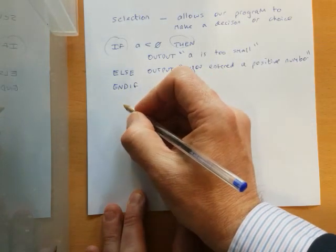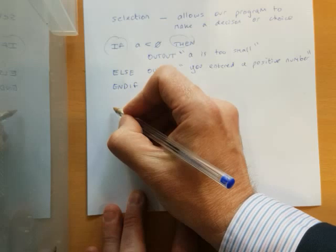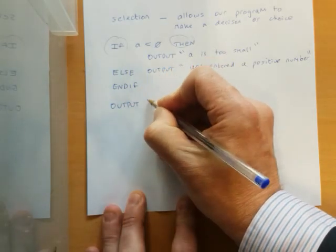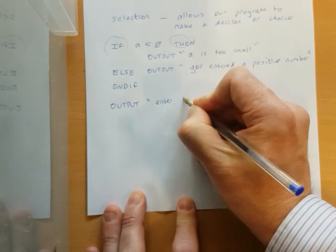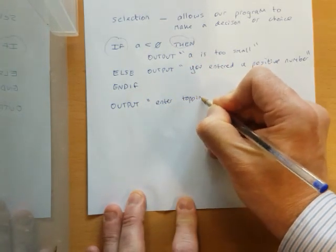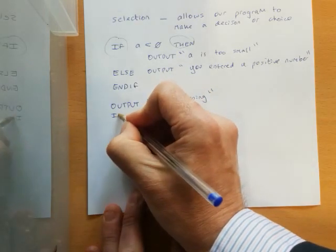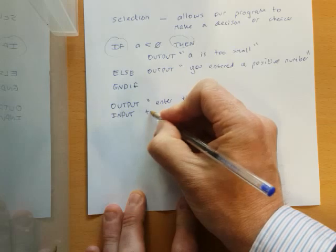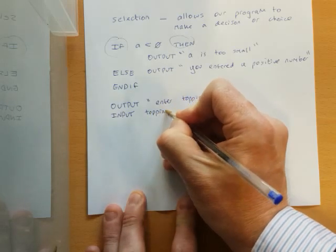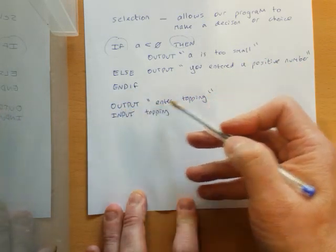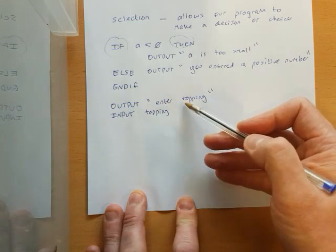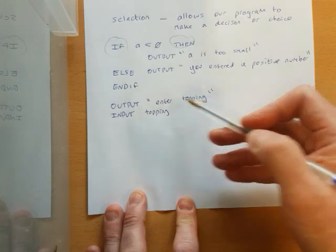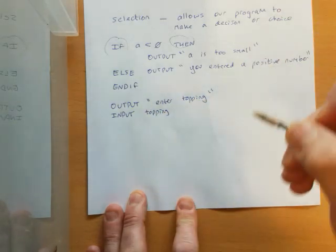So the second method of selection will be case. So we'll have a little bit of code here. So we'll output a message: Enter topping. And then we will input. So don't forget, I've mentioned this before, if you have to input something, well you need to put a message on the screen so the user knows what they're doing. And obviously if you're putting a message on the screen for somebody to input something or enter something, make sure you input it.